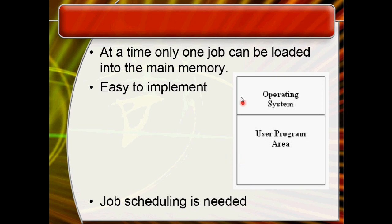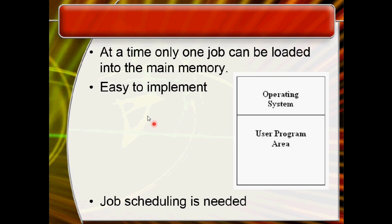This diagram is very important for the batch system. The main memory has one portion for the operating system and another for the user program area. In a batch system, only one job can be loaded into main memory at a time. The advantage is that it is easy to implement, but the drawback is that throughput is low because only one job executes at a time.